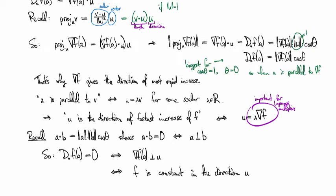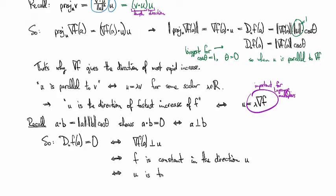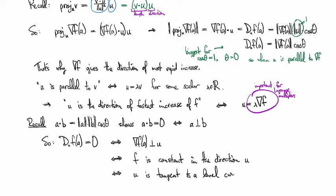So, this means the same thing as saying that f is constant in the direction u, right? Because the directional derivative is not changing. And geometrically, that means that u is tangent to a level curve of f at a.